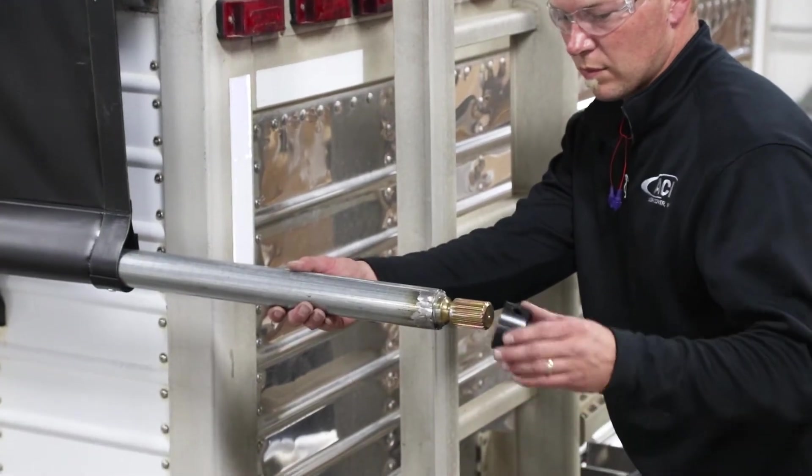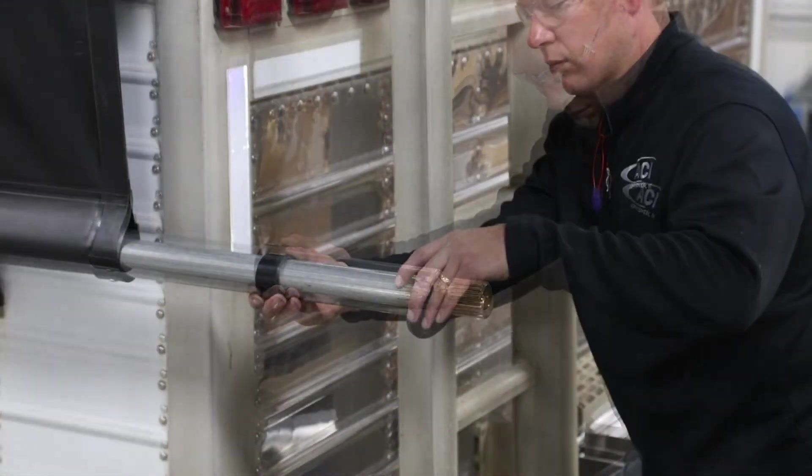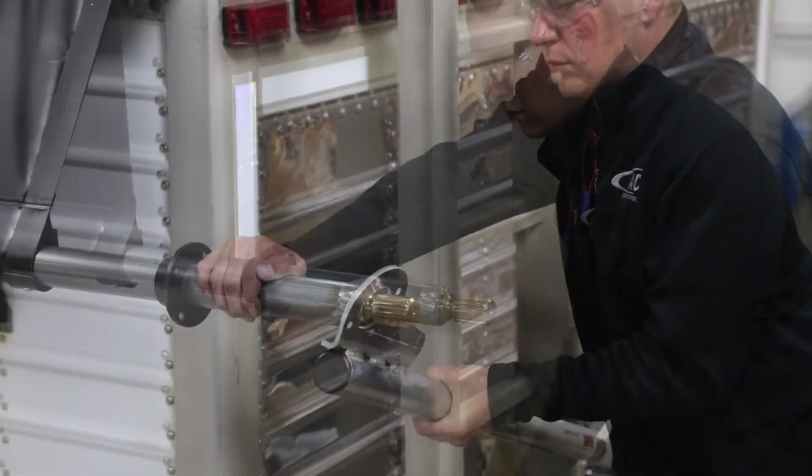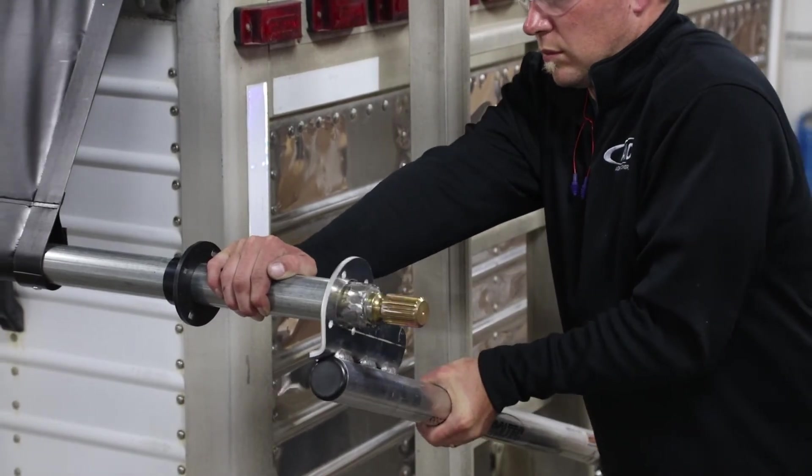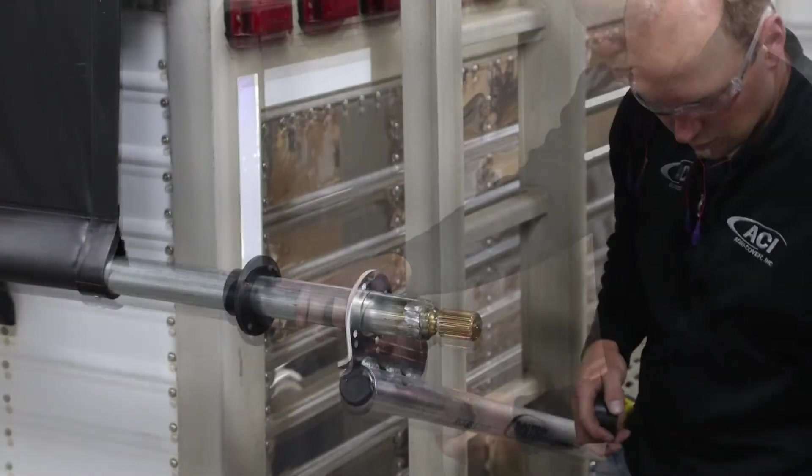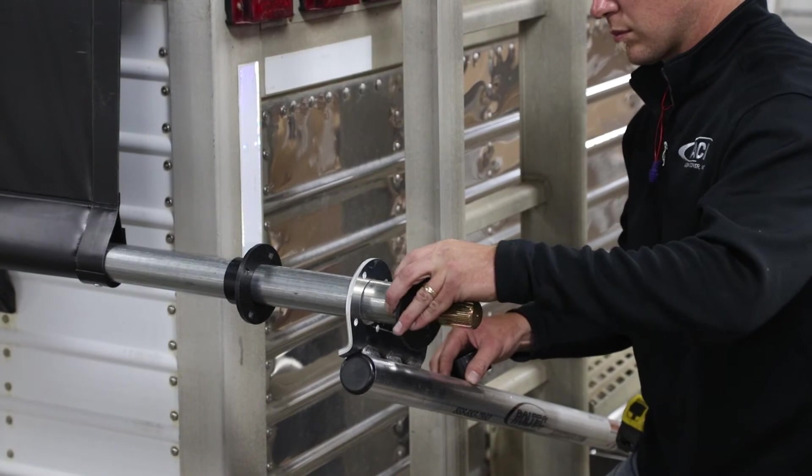Slide inside collar and inside tube wear bearing onto roll tube. Raise arm and slide onto roll tube. Slide another tube wear bearing onto outside of arm.